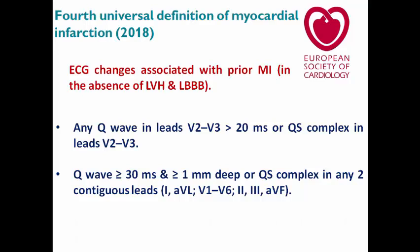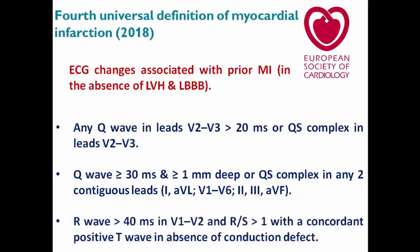Or a Q wave more than or equal to 30 ms, or QS complex in any two contiguous leads of leads I, aVL, inferior leads, or V1 to V6. Or R wave more than 40 ms in V1 and V2 with RS ratio more than 1 and concordant positive T wave in absence of conduction defect — consistent with posterior wall myocardial infarction criteria.